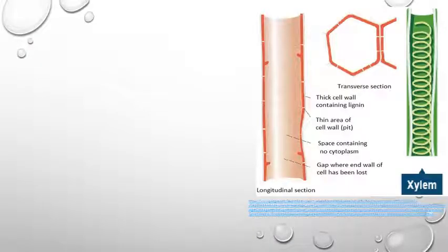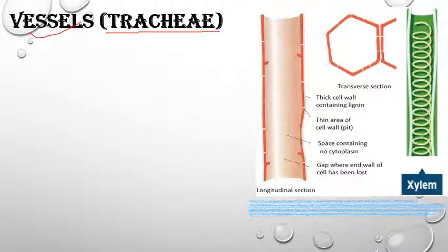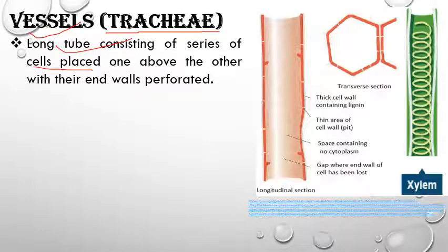Vessels are the main conducting tissue in angiosperms — the name 'angiosperm' itself comes from 'angios' meaning vessel. Vessels are also known as trachea. In longitudinal section, these are pipe-like structures formed by many cells placed one over the other, forming a long tube. Their end walls get dissolved to form a continuous column, and the end walls are perforated.